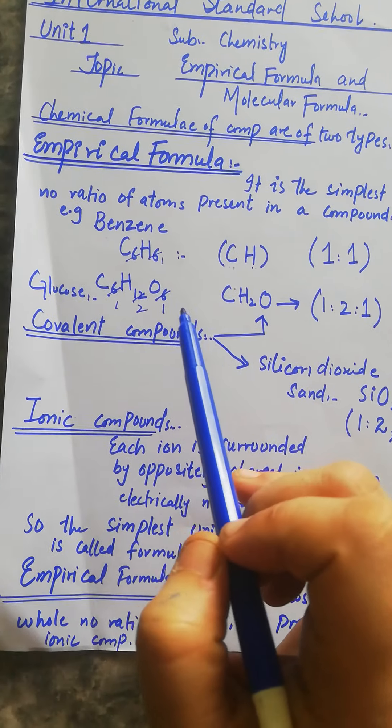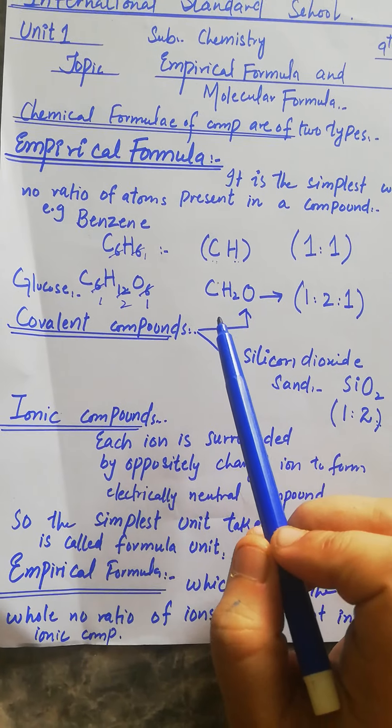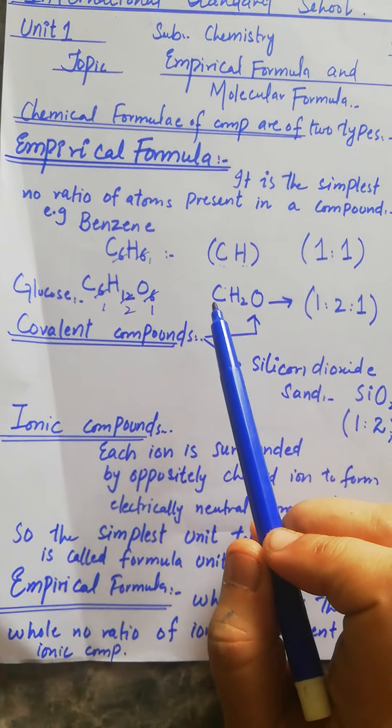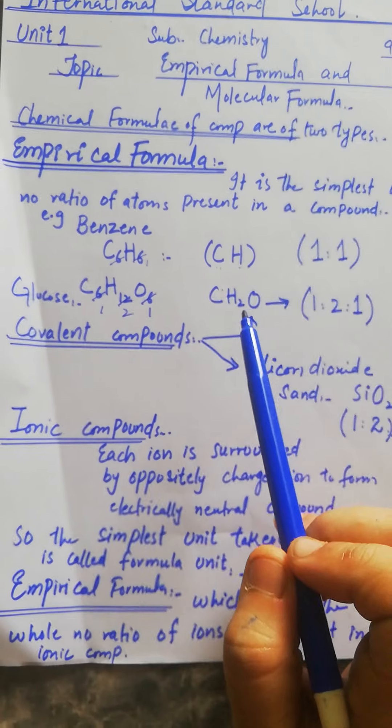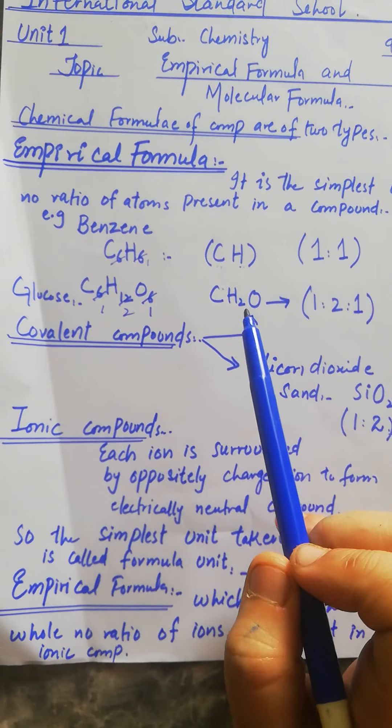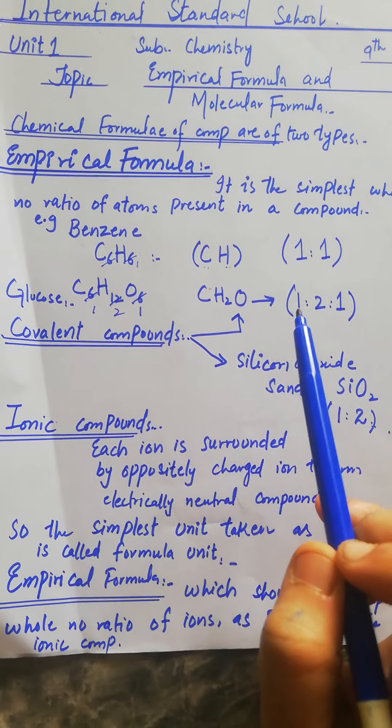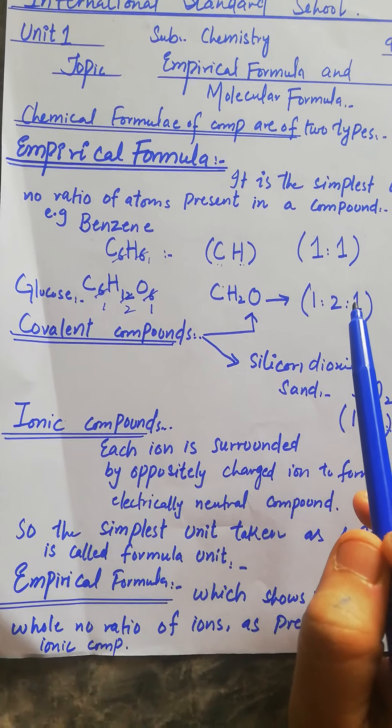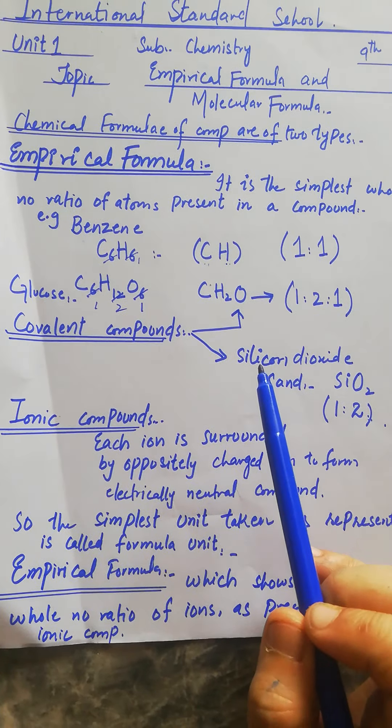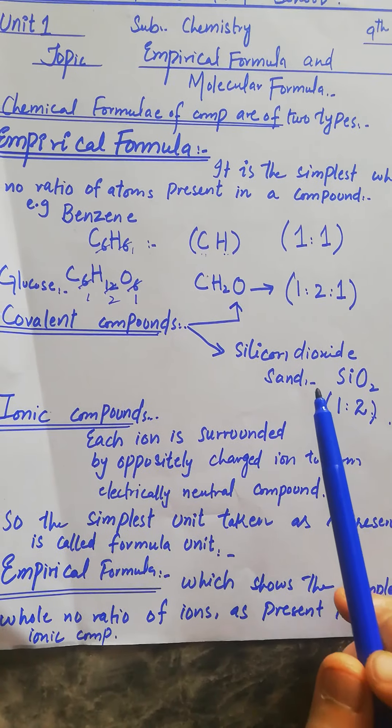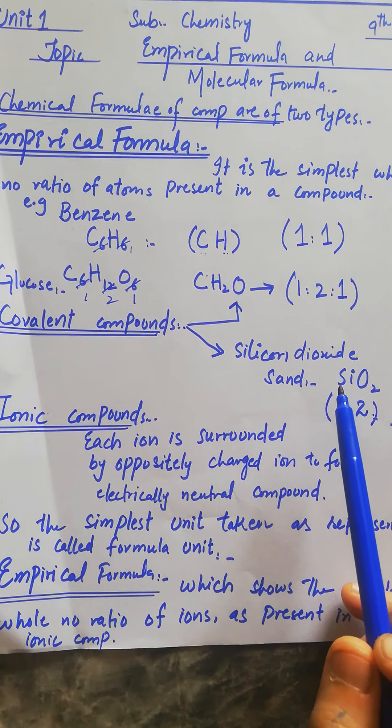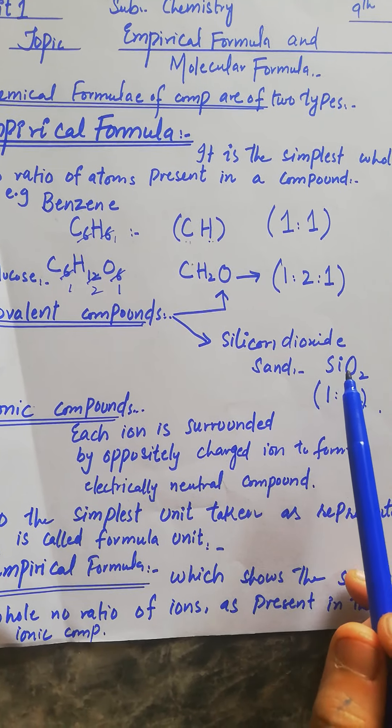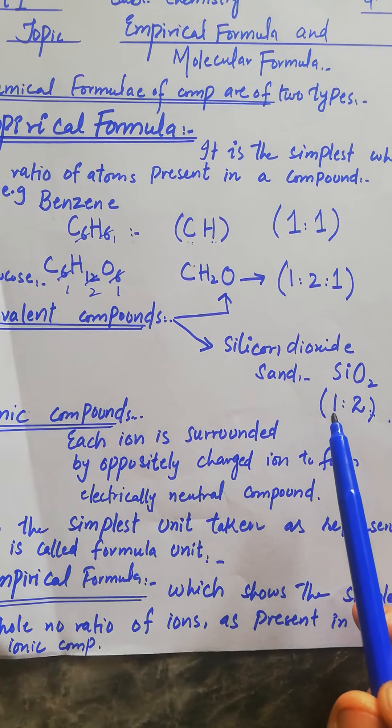This is how for all covalent compounds, like glucose, the simplest formula CH2O shows the simplest whole number ratio found between the elements present. Similarly, sand, which is silicon dioxide (SiO2), has two elements: silicon and oxygen, with a simplest ratio of 1:2.